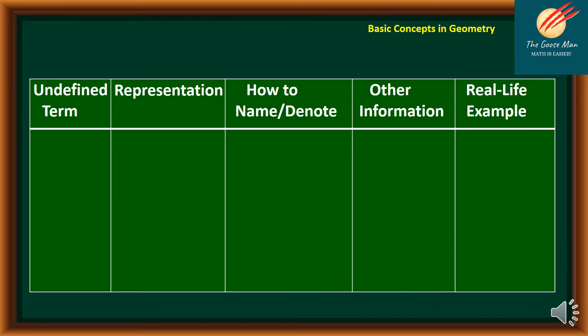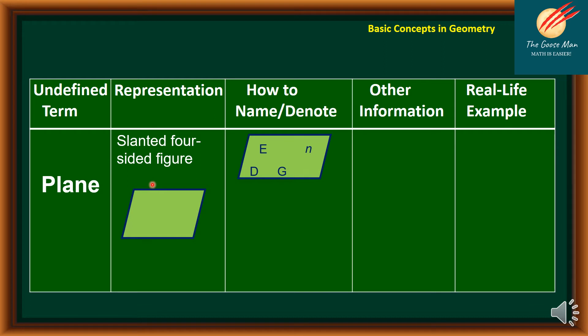The next definition of term that we will talk about is about plane. This is our representation for the plane. We have a slanted four-sided figure, and this is the illustration. So how to name or denote this? Let's consider this figure. We have the points DEG, N. So we can rename this one with a small letter. We have plane N.